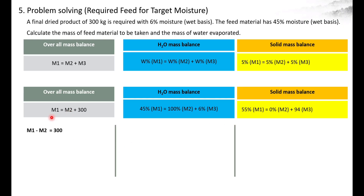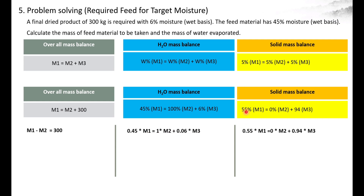Now let us solve the equations. Keeping unknowns on the left and known values on the right: M1 minus M2 equals 300. For the water balance: 0.45 × M1 equals 1 × M2 plus 0.06 × M3. For the solid balance: 0.55 × M1 equals 0 × M2 plus 0.94 × M3.